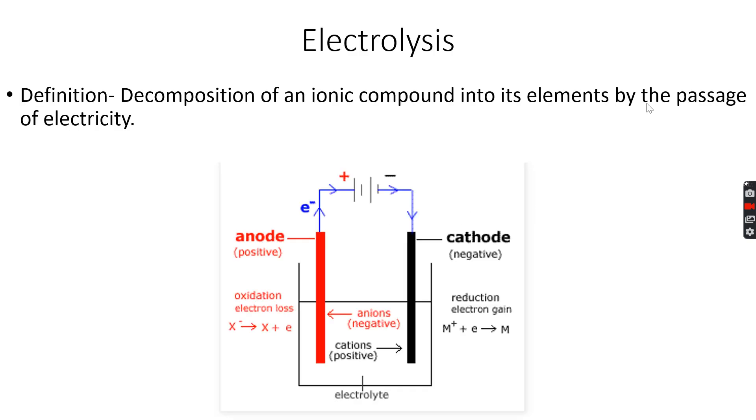Now electrolysis. So you know this is basic electrolysis. You can see the diagram over here, and by definition, electrolysis is the decomposition of an ionic compound into its elements by the passage of electricity.